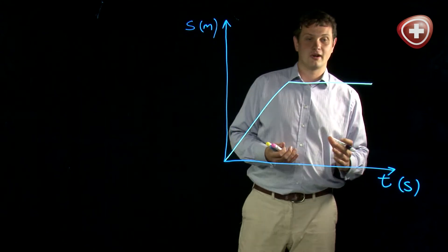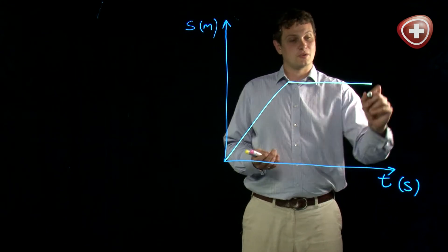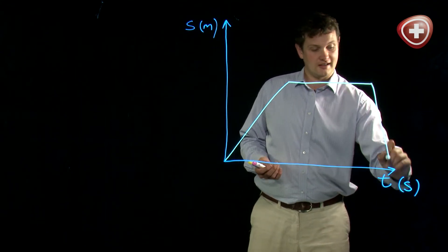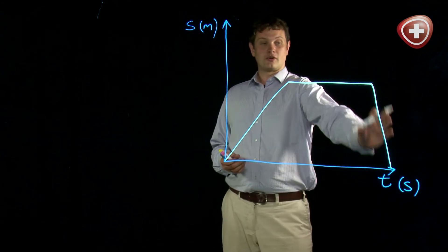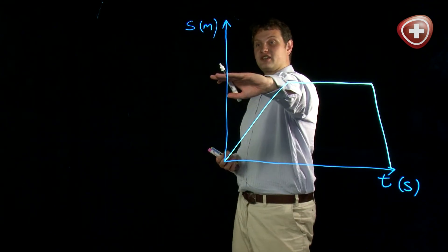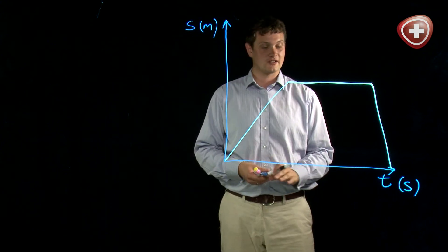Then I realize I'm running late and I need to get home again, so I very quickly go back down on my graph, back home. My displacement is going down back to where I started.